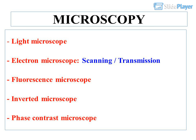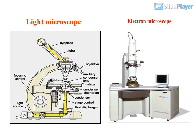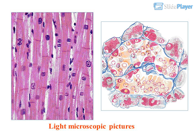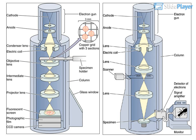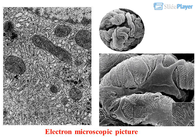Microscopy: Light Microscope, Electron Microscope — Scanning and Transmission — Fluorescence Microscope, Inverted Microscope, and Phase Contrast Microscope. Light microscopic pictures and electron microscopic pictures are shown.